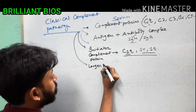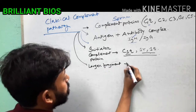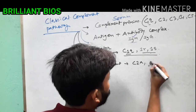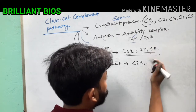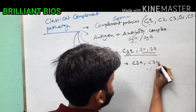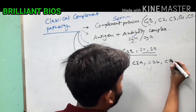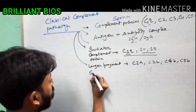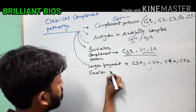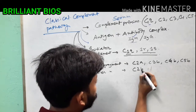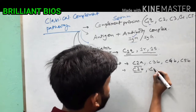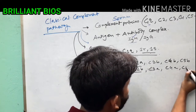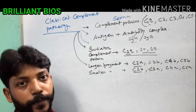To summarize: the larger fragments are C2a, C3b, C4b, and C5b. The smaller fragments are C2b (the exception), C3a, C4a, and C5a. You must remember this before you begin to understand the complement pathway.